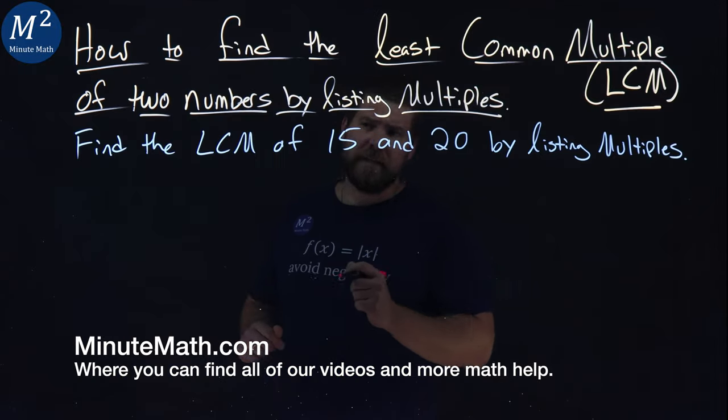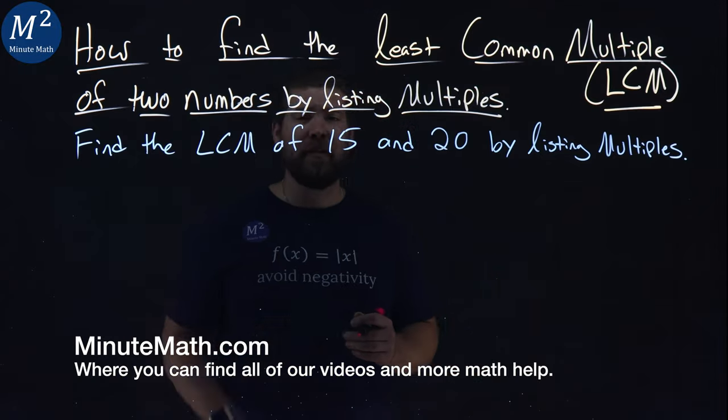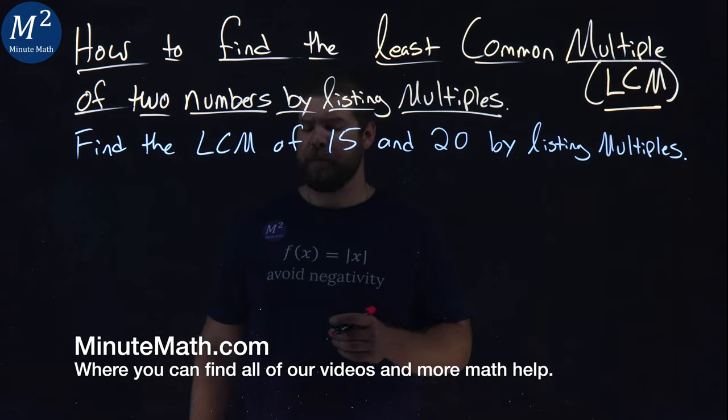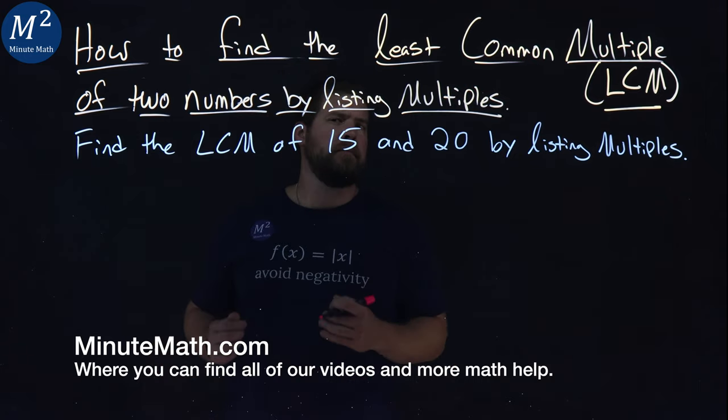We're given two numbers here, 15 and 20, and we want to find the LCM of them by listing multiples. What does it mean to list multiples?